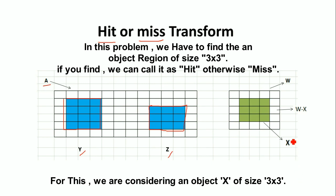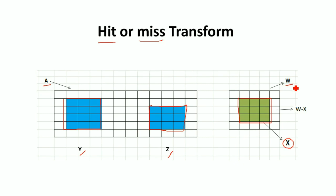We are using an object X which is of size 3 by 3, and this object X is embedded into a window of size W. To get the boundary of this window, we compute W minus X — that is, we subtract X from window W so that we get the boundary of the window.